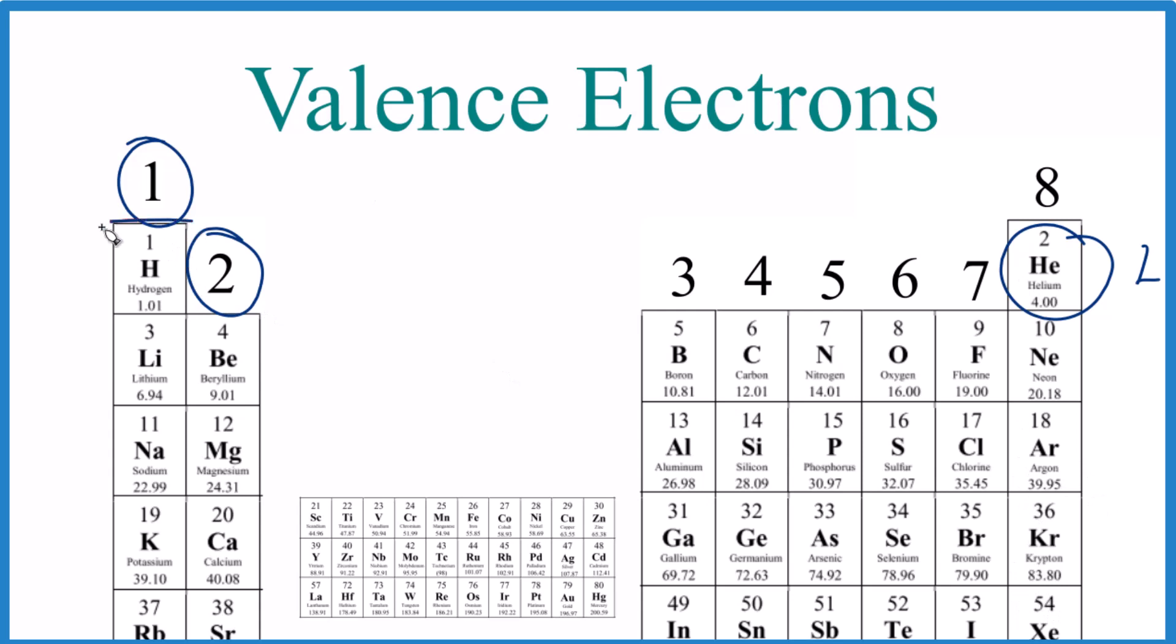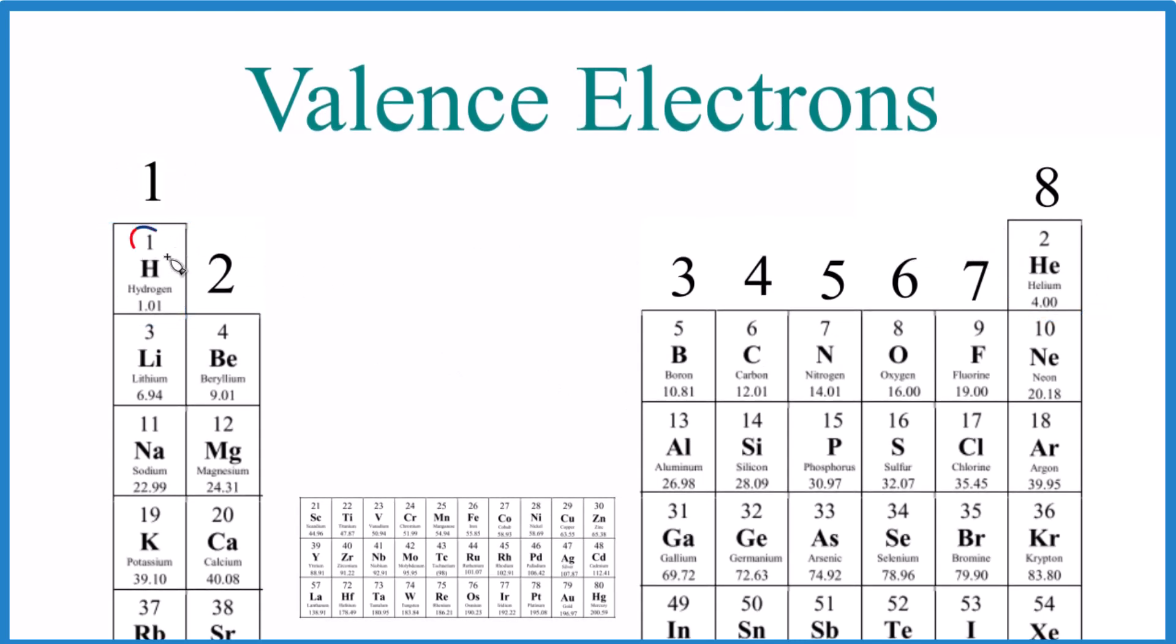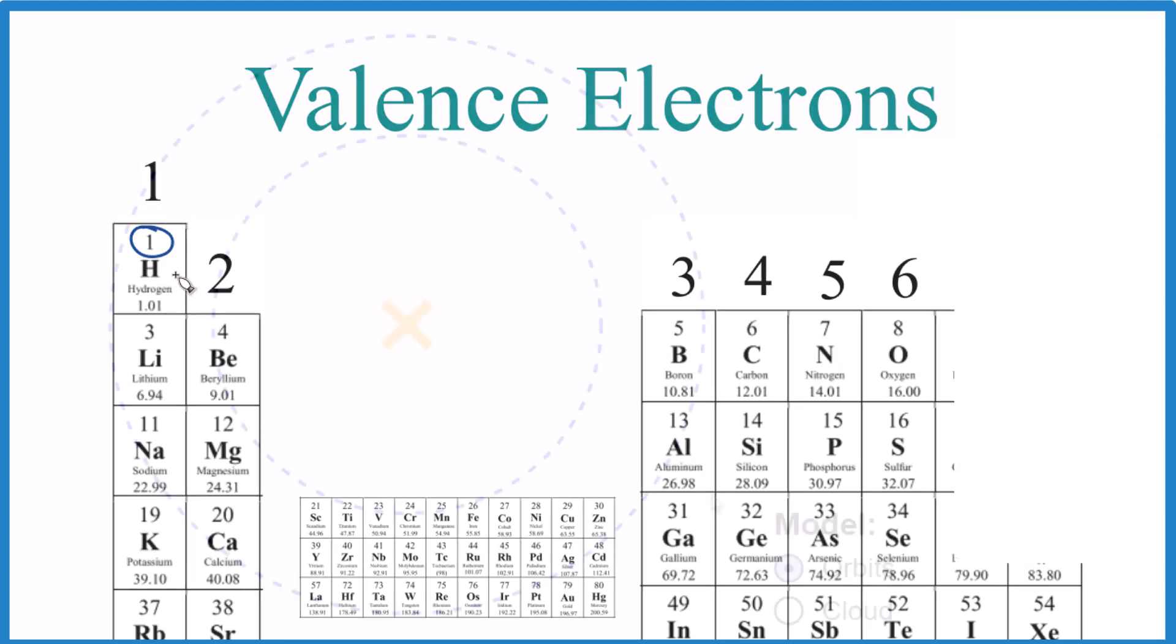So that's the trend. Here's hydrogen. It has 1 valence electron. Let me show you why that is. Hydrogen's atomic number is 1, so it only has 1 proton in the nucleus. And that means, since these are neutral, it only has 1 electron. So let's build a hydrogen atom.